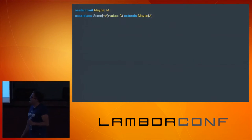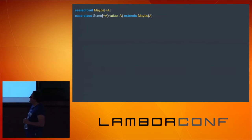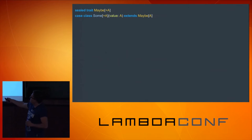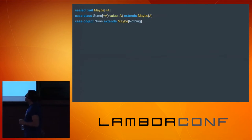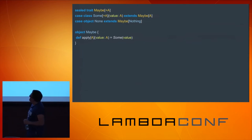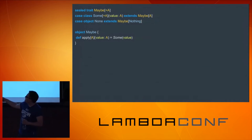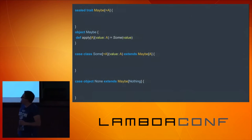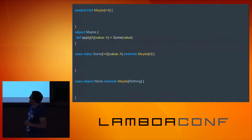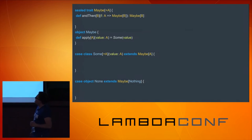So Maybe as a type is parameterized by A. It has two different extensions: we have Some, which will basically wrap our value A, and we also have None, which simply is nothing. And we have a method to lift any value A into our Maybe type. And we have one method here in our trait, which will be called andThen.